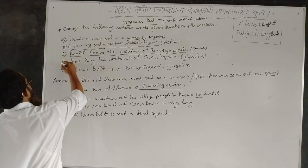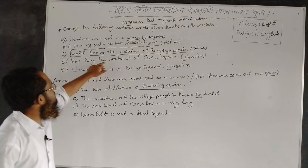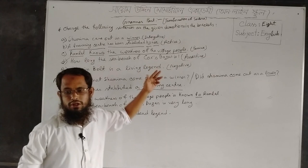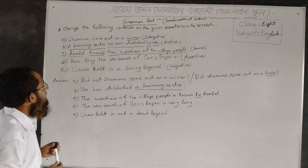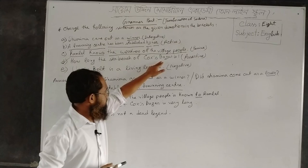The next sentence, sentence D: How long the sea beach of Cox's Bazar is? Assertive is in the bracket — that means you have to change it as an assertive sentence. It's an exclamatory sentence; you have to change it as an assertive sentence.